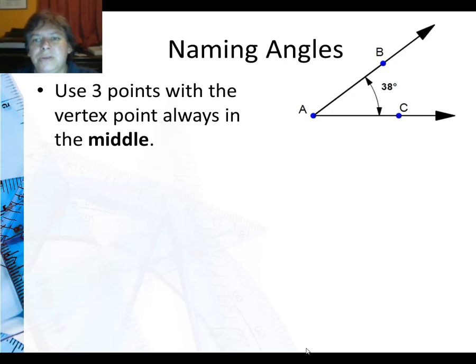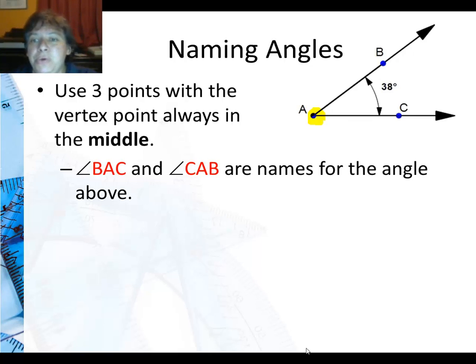When naming angles you want to use three points with the vertex point always in the middle. So in this example, the vertex is A.